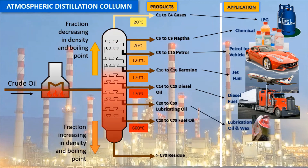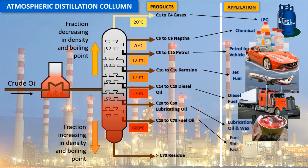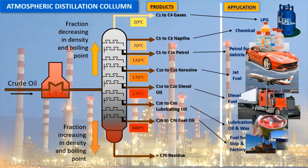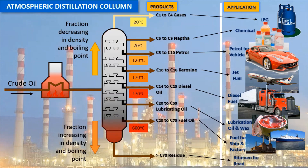Besides the products directly derived from crude oil, there are over 6,000 items derived from petroleum byproducts. Some examples include fertilizer, perfume, insecticides, soap, and vitamin capsules.